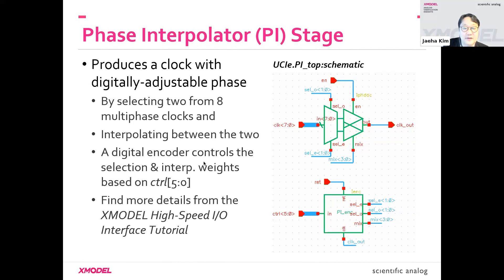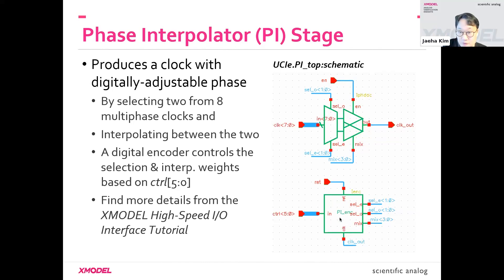This is a really cool circuit. In our example, we assume our control code for adjusting the phase has six bits — that's 64 steps. The encoder block translates that into proper inputs driving the mux and driving the phase interpolator, giving you 64 steps spanning the entire 360 degrees.